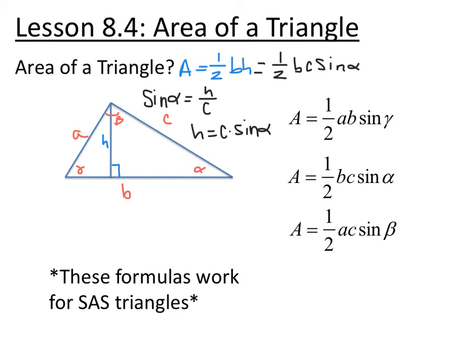These work for side-angle-side problems. If you have side b and side c and the included angle alpha, a, b, and c will always show up in this formula. One will be the angle and the other two would be the sides. For instance, if I have side a and side b and the included angle gamma, or side a and side c and the included angle beta.